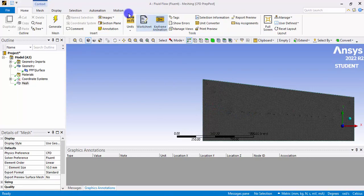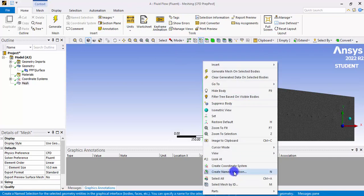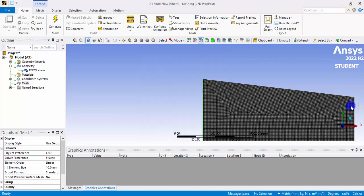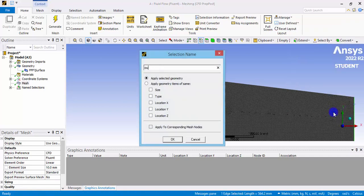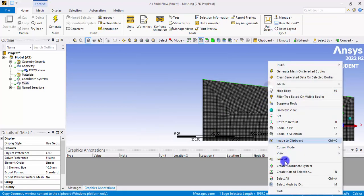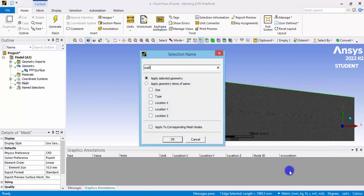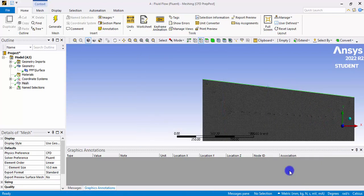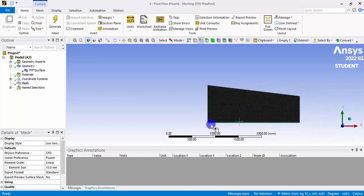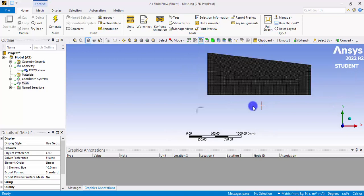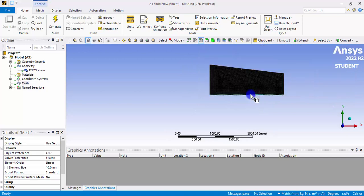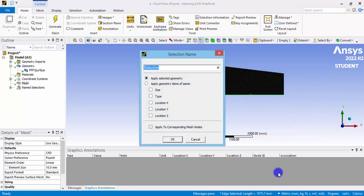Here, this is our inlet. We have to change to edge selection mode and click the inlet edge and right-click and give a name selection as inlet. Then select the outlet edge and right-click, then give the name selection as outlet. And this is the wall. Let's name that as a wall. Even if we don't define that as a wall, that will be considered as wall by ANSYS Fluent. This is the axis we need. We need to have an axis symmetry. Click that edge and name that as axis.